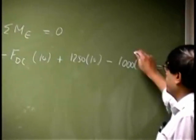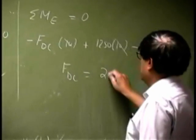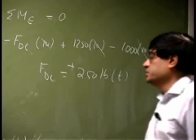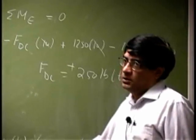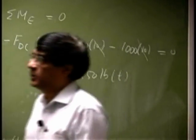So this will get cancelled and you get FDC as 250 pounds and it came out positive, it remains in tension. So this force can be found by a different method or by choosing a different equation.